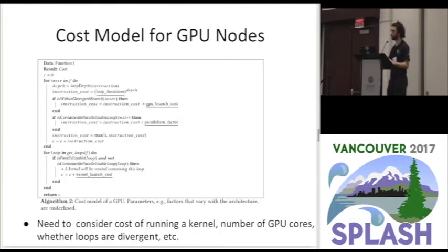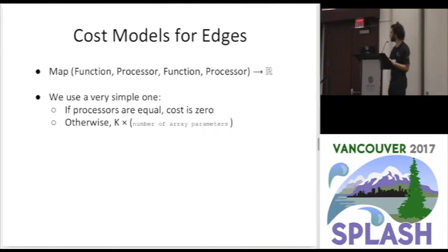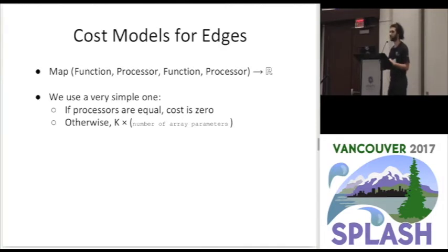For a GPU cost model, we need additional factors such as the cost of launching a kernel, the number of GPU cores, and whether loops are divergent — factors that affect GPU performance. For edge cost models, they tell us the cost of a function call from one processor to another. If the processors are equal, the cost is zero — no memory copy needed. If calling across different processors, we multiply the number of array parameters by a constant K, treating array transfers as expensive and scalar transfers as negligible.